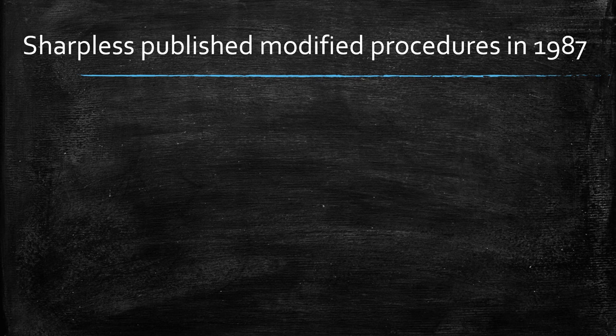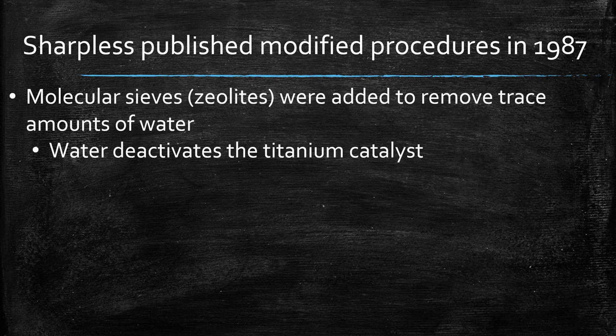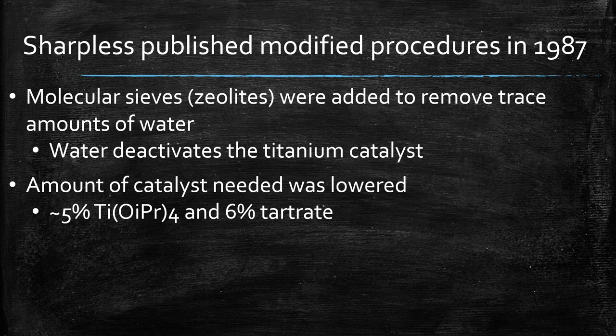In 1987, Sharpless published a modified procedure. A big improvement was the use of molecular sieves — zeolites — added to remove trace amounts of water, because water was observed to deactivate the titanium catalyst. This made the reaction much more efficient and allowed the amount of catalyst to be lowered to just 5% of the titanium and slightly more of the tartrate. So whereas it was stoichiometric when first introduced in 1980, these optimized conditions allow for much less catalyst.